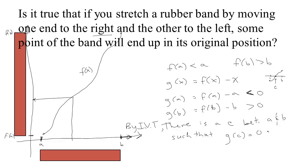But G of C would be F of C minus C and solving this equation says that F of C equals C. That means that the location of this one point C after it was stretched was the same as its original location. So, that's the point, there's this point C that didn't move.